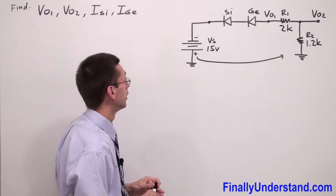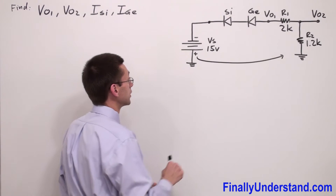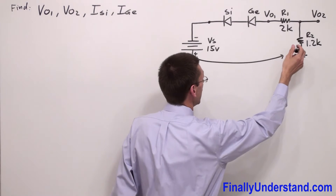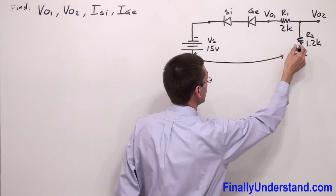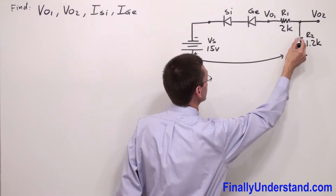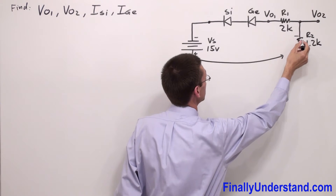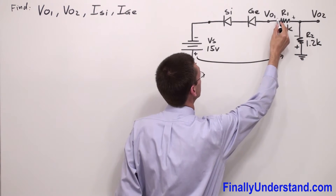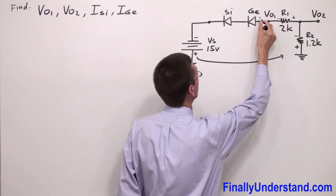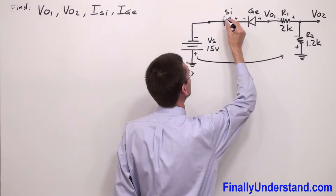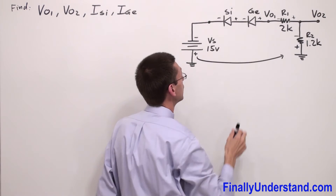Current is going to flow, so anytime current is entering a component I write a positive sign, and anytime it is leaving I write a negative sign — positive, negative, positive, negative, positive, negative.